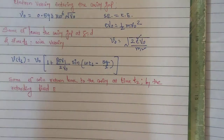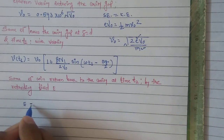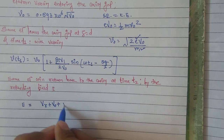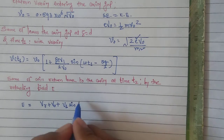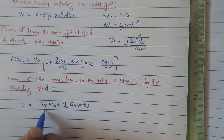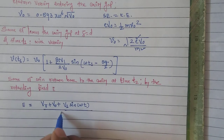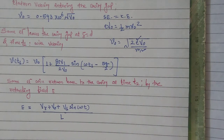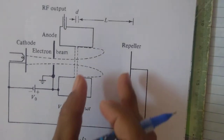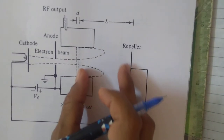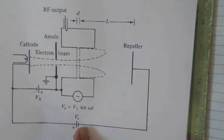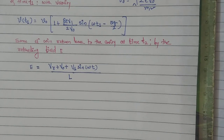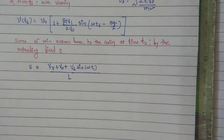The retarding field E is given in volts per meter. Three voltages are present in the tube: the repeller voltage, the beam supply voltage, and the microwave signal. These three voltages, divided by the space between the cavity and the repeller of length l, give the electric field. So the field is E equal to (V_r plus V0 plus V1 sin(omega t)) divided by l.